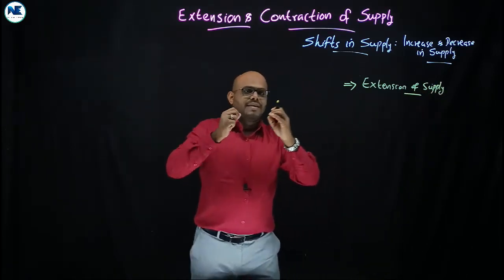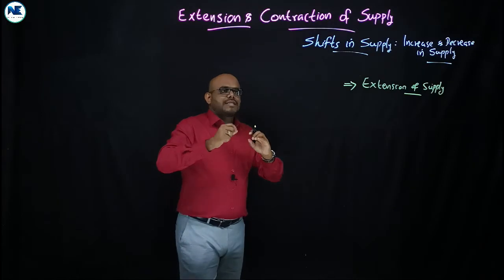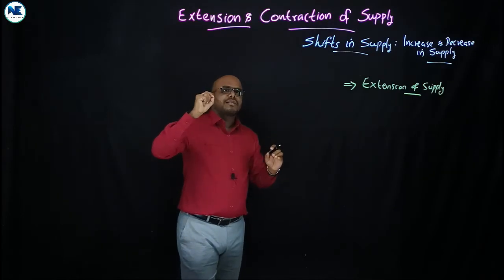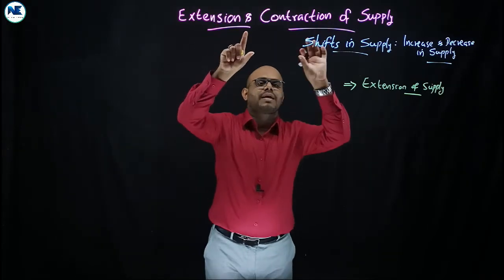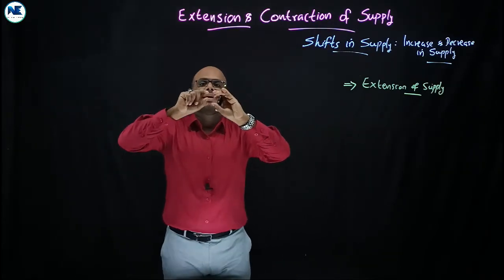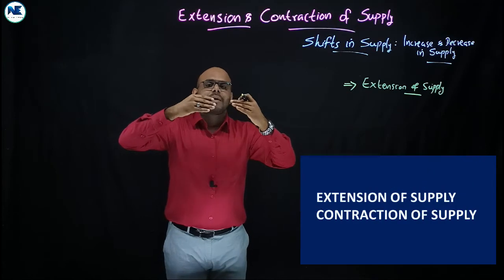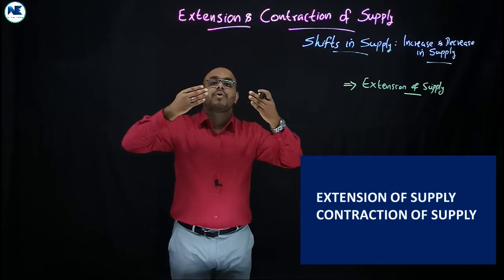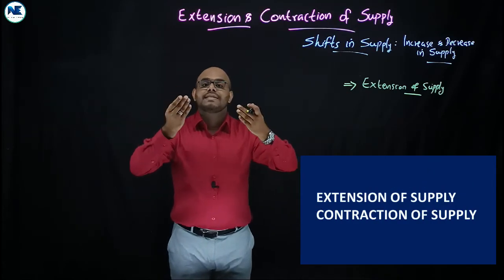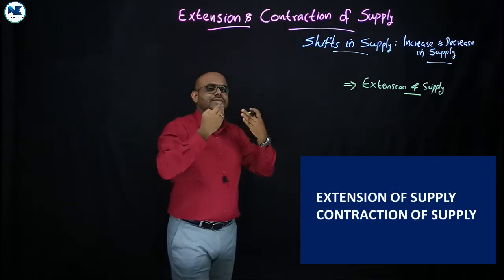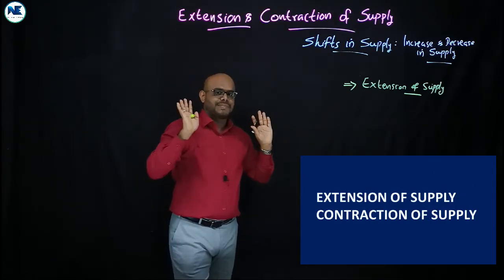Please understand one important thing: extension and contraction of supply happen on account of changes in the price of the commodity.